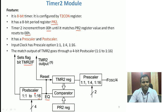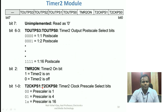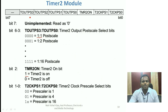In the Timer 2 Control register, bits 0 and 1 set the prescaler value — three values possible: 1:1, 1:4, and 1:16. Timer 2 runs only if the Timer 2 ON bit is set to 1. The post-scaler option is controlled by four bits (T2OUTPS3 to T2OUTPS0) which are responsible for post-scale values from 1:1 to 1:16. This completes the Timer 2 Control register.